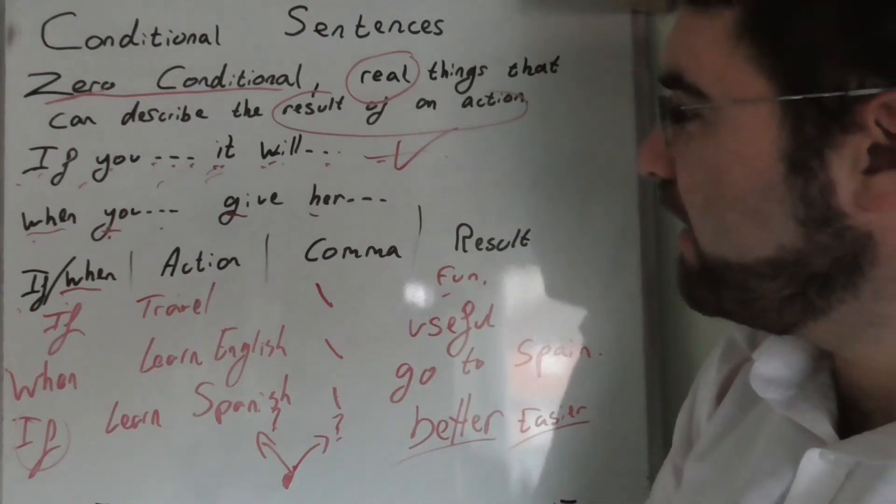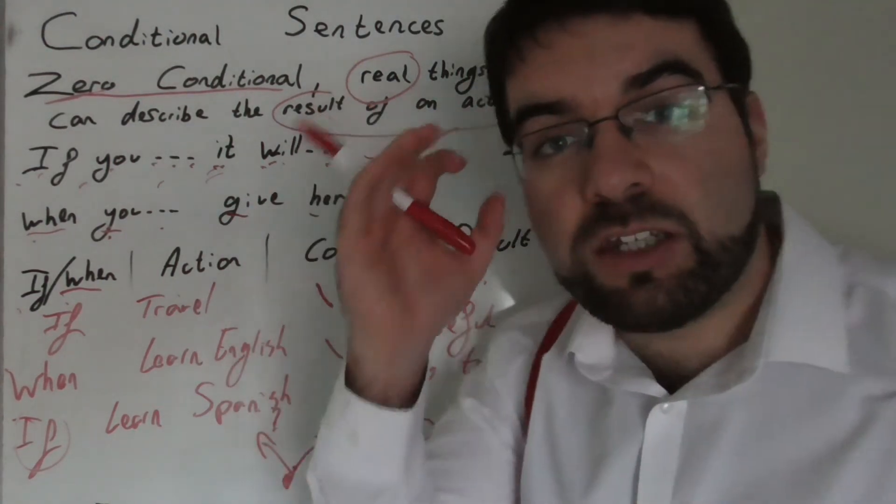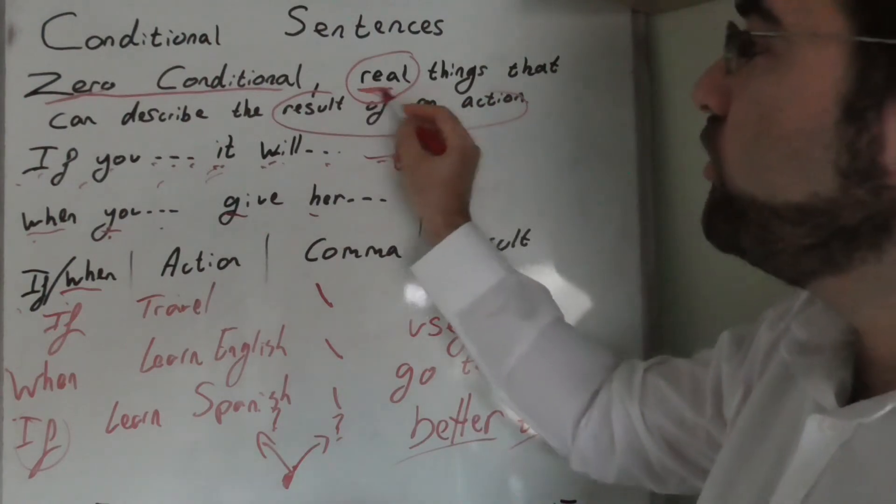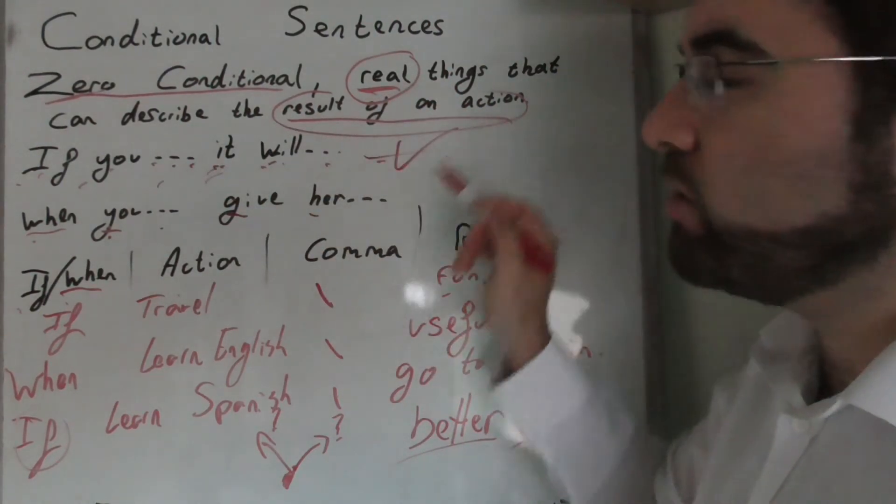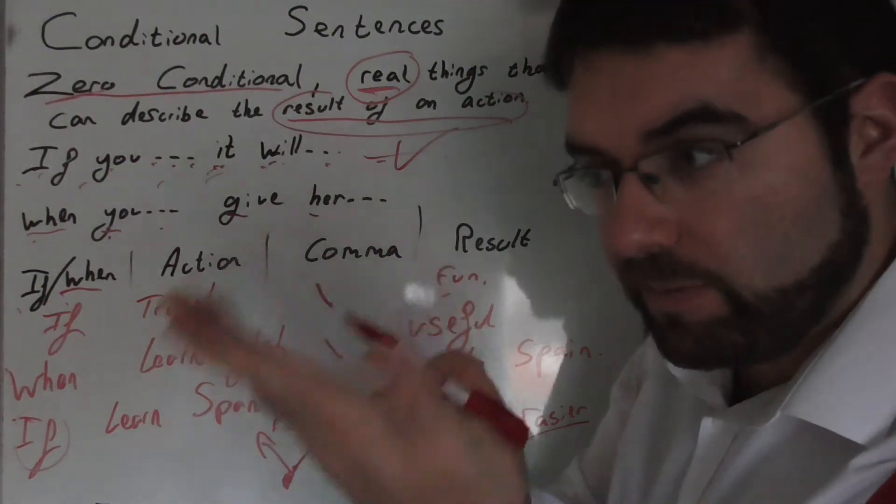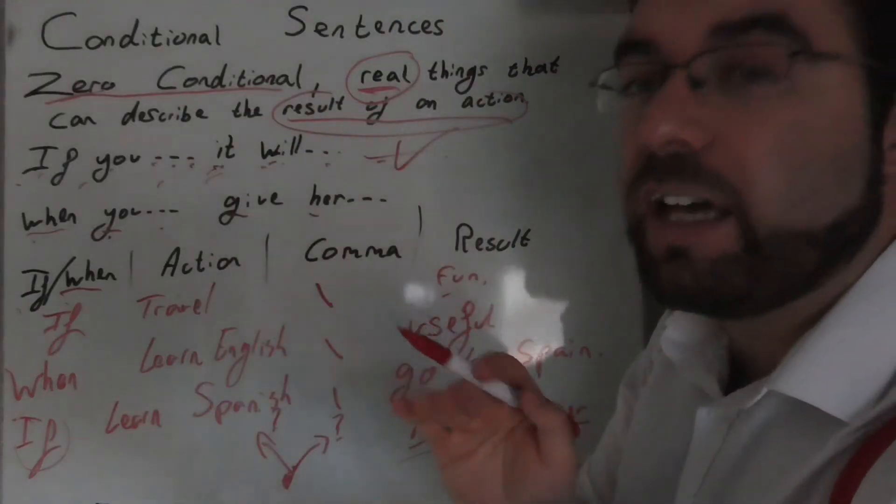So again, the zero condition is dealing with reality. The real things that can describe the result of an action. If you do this, you will get that.